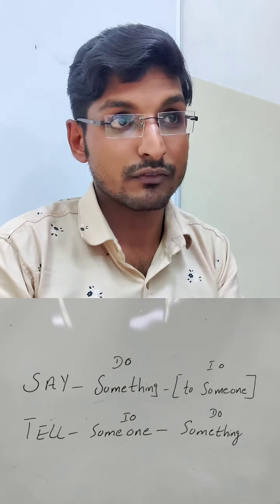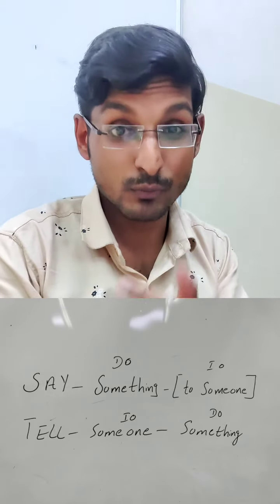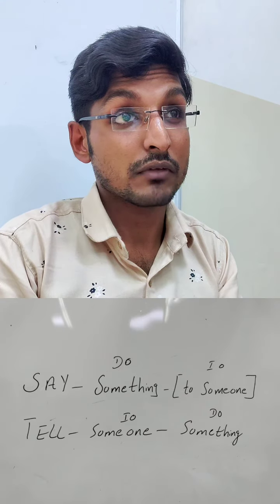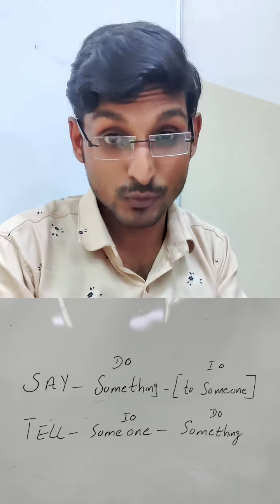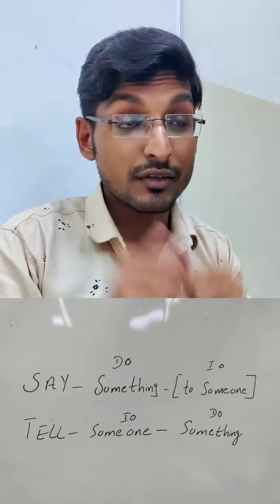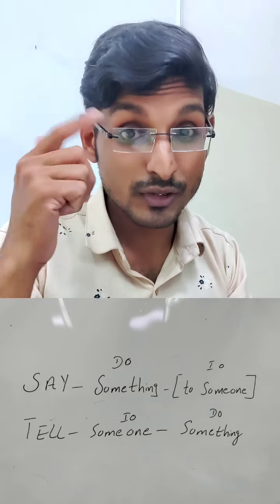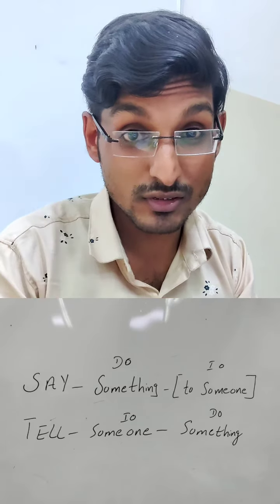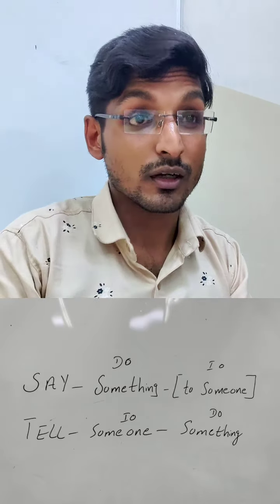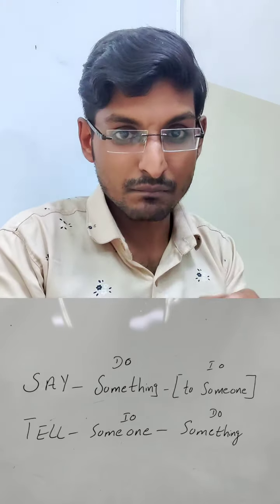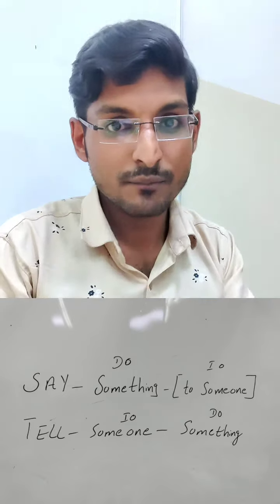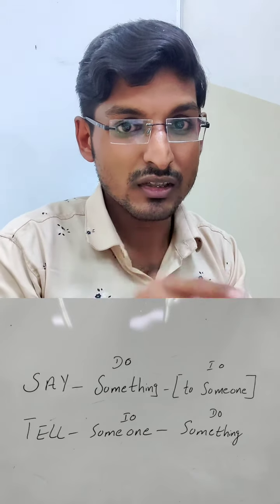If we speak in grammatical terms: after 'say' we use the direct object, and after 'tell' we use the indirect object. But if you're not living in the grammatical world, just ignore that and concentrate on the pattern: 'say something to someone' and 'tell someone something.' Okay, let's see how they work in examples.